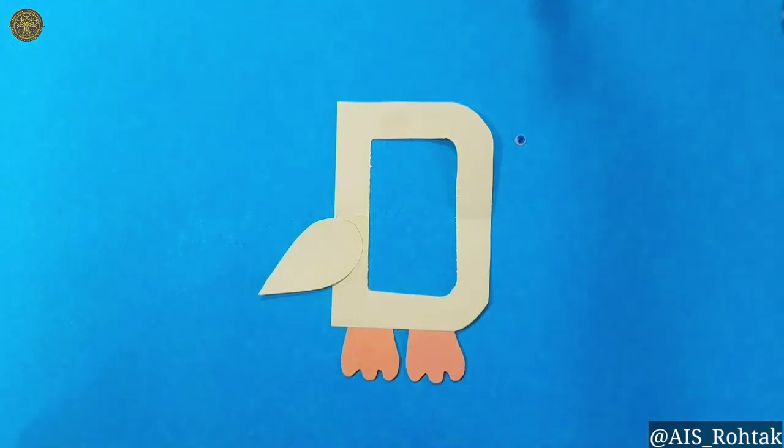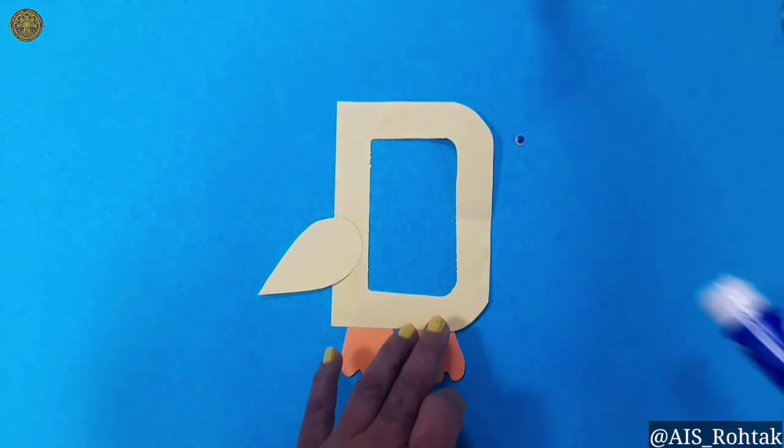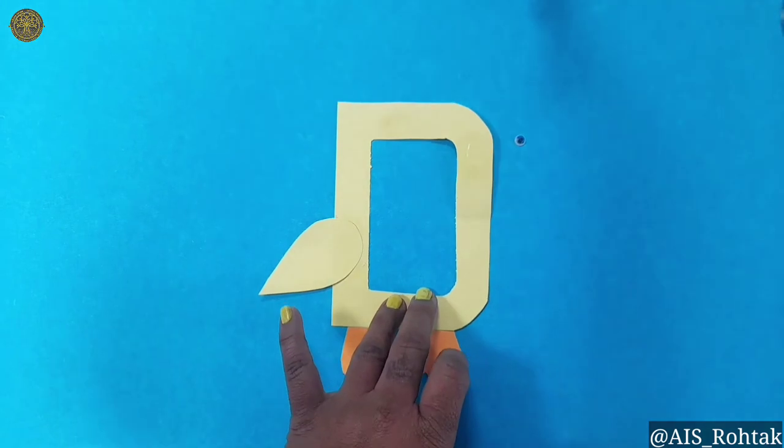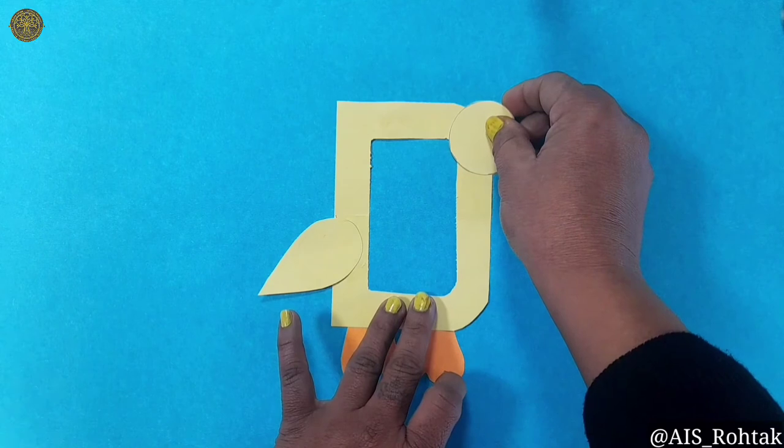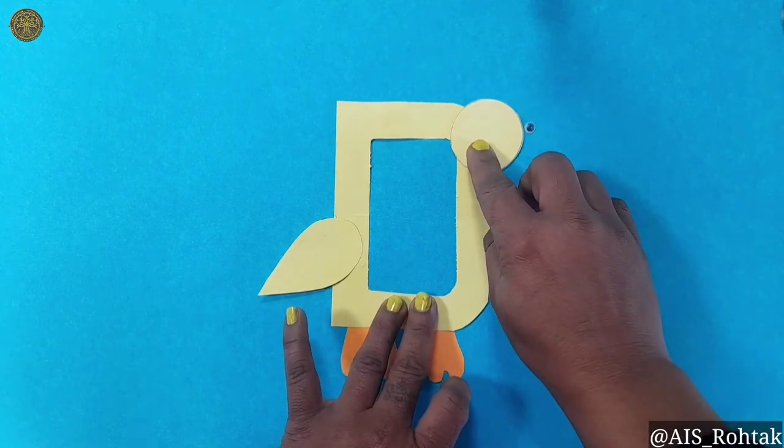Then apply glue stick on the top side and paste the circle shape here as the face of the duck.